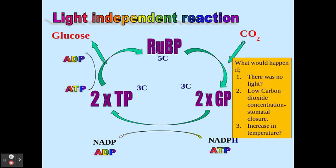If I've got a low concentration of carbon dioxide, this means I'm going to get less carbon fixation — less RuBP binding to carbon dioxide to form GP. My GP can still be converted into TP, and TP into RuBP can still occur. So I'm going to get a buildup of RuBP and a reduction of GP.